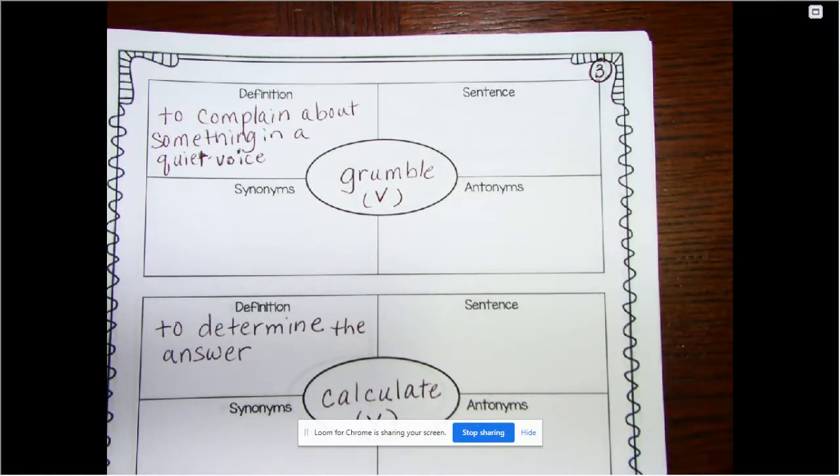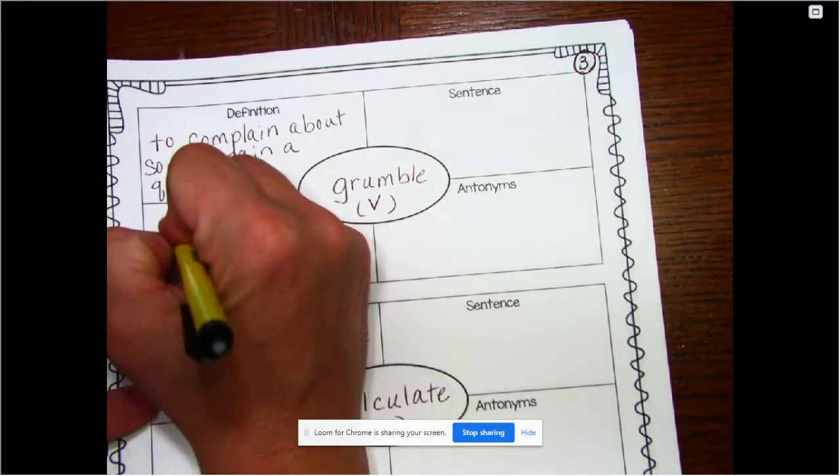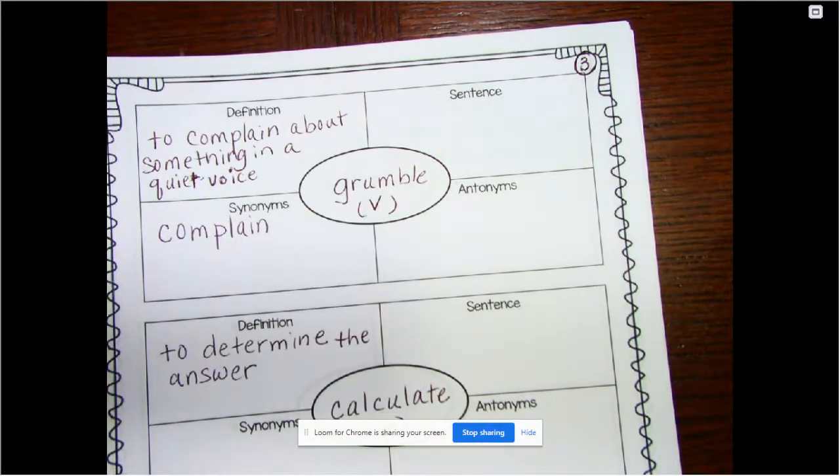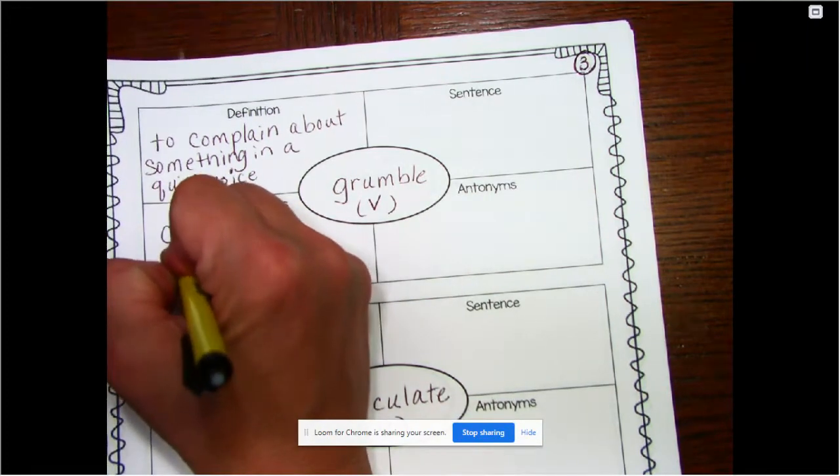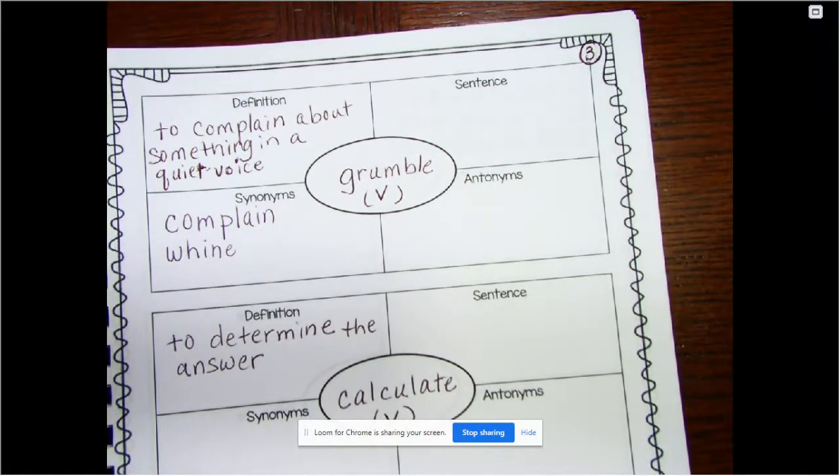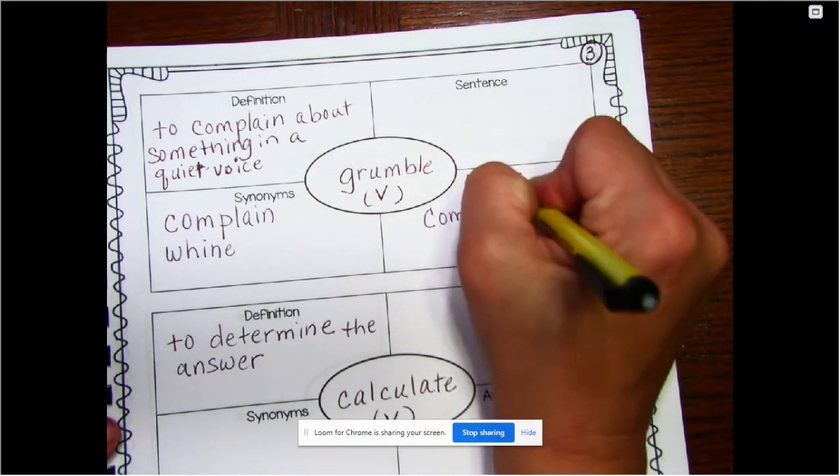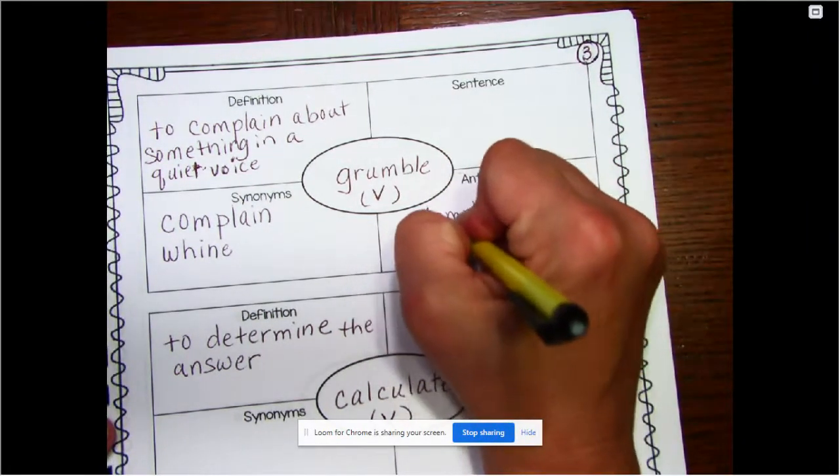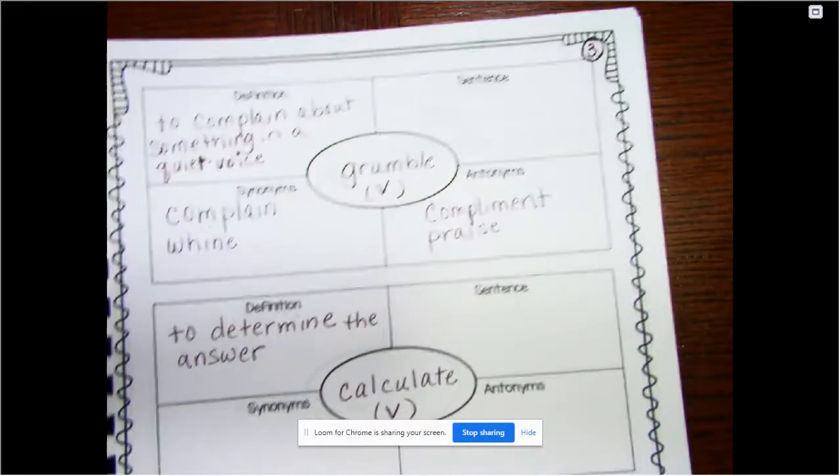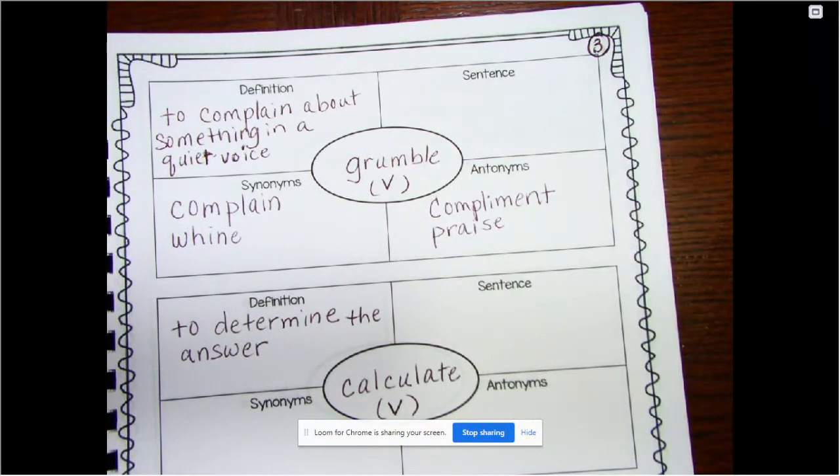Turning it over to page three, our next word is grumble, to complain about something in a quiet voice. One of our classmates picked that as their answer for yesterday's questions. They like the way that rumble sounds. All right, so to grumble would be similar to saying complain or whine. You might whine about it like, oh man, I don't want to. So the opposite of complaining or whining or grumbling would be to give a compliment or praise. Like, oh, that is great, I love it. Compliment or praise would be opposite of complaining and whining and grumbling.